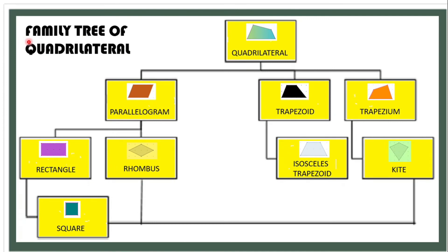Let's take a look at the family tree of quadrilaterals. On top we have the general quadrilateral — a four-sided polygon whose interior angles sum to 360 degrees. Under quadrilateral, we have the parallelogram, which has two pairs of parallel sides; the trapezoid, which has one pair of parallel sides; and a quadrilateral with no parallel sides.